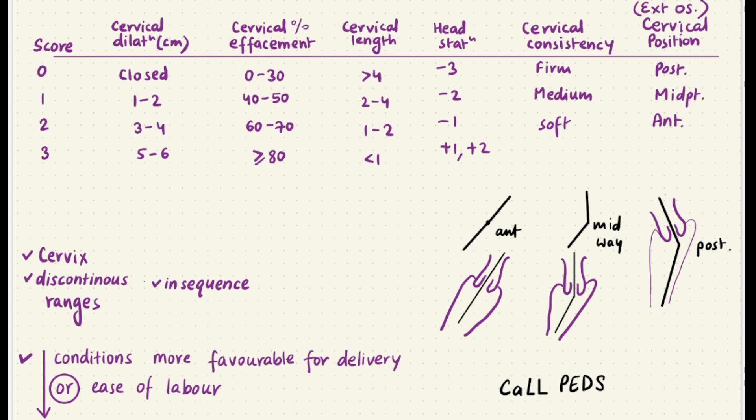Previously, even in my Breast Score video, I had talked about what discontinuous ranges are, and you've already studied it in PSM as well. So this does not start with two — it starts with three — that's why these are discontinuous ranges.